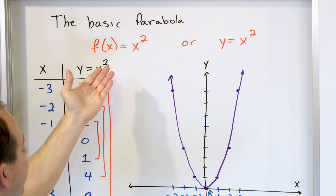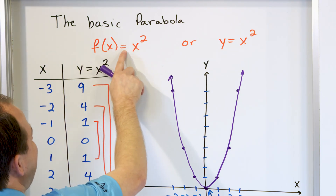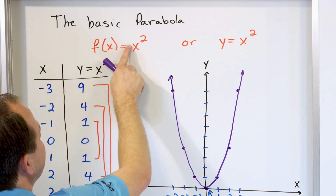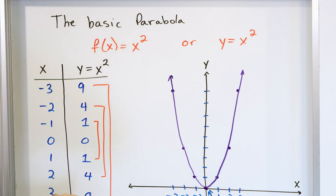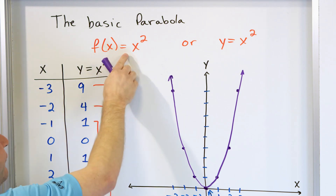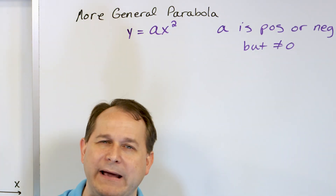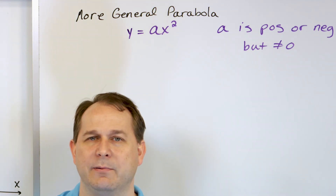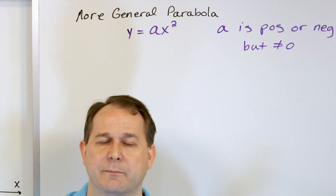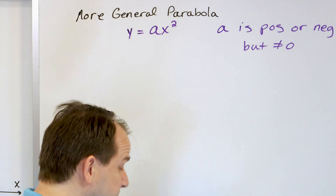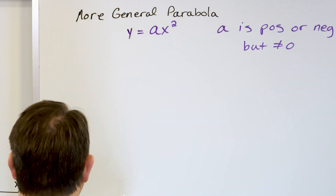You might ask how that relates to what we had before. Well, in the general form y equals ax squared, the basic parabola has an invisible 1 in front. So for the basic parabola, a is just equal to 1. When a equals 1, you have the most central parabola, and anything other than 1 will slightly change the shape. The most important thing about a is the following.